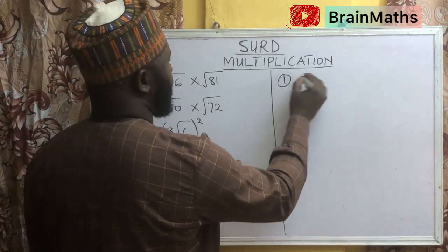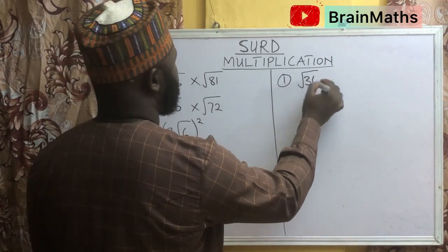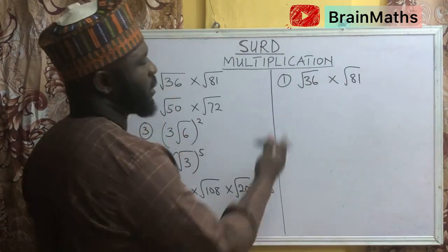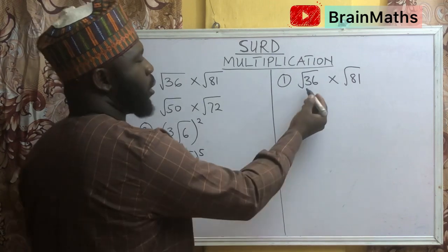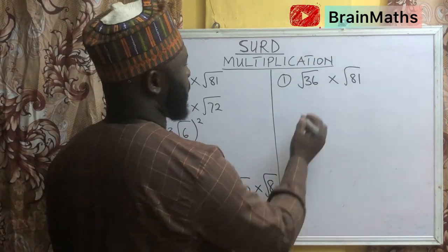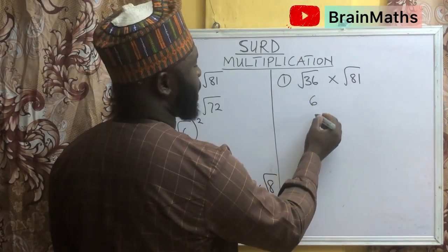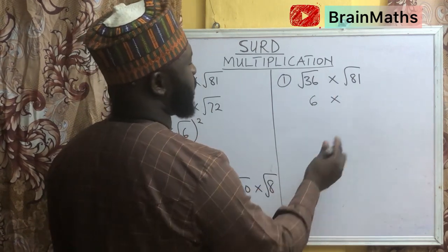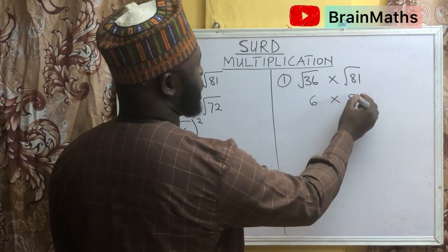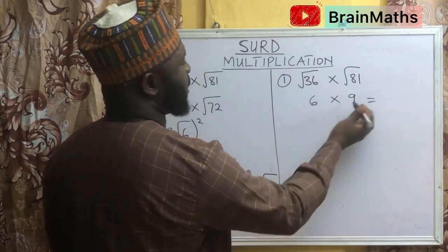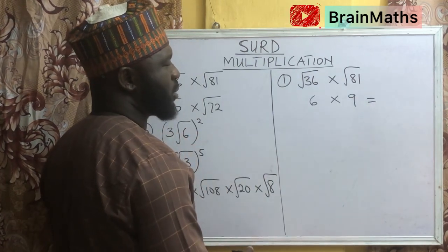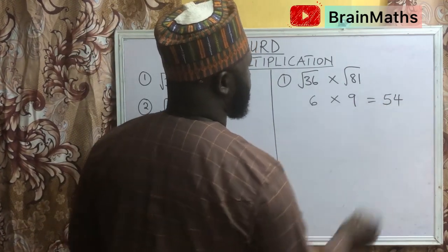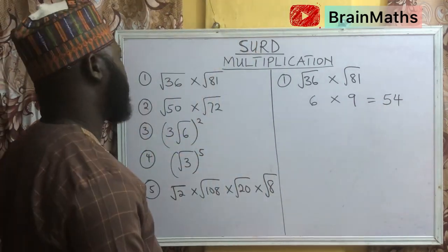The first question says: square root of 36 multiplied by square root of 81. This is a direct question. Square root of 36 is 6, multiply by square root of 81, which is 9. And the next thing is to multiply 6 by 9, and that is going to give us 54. So that is that about question number 1.